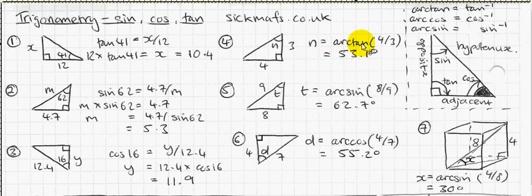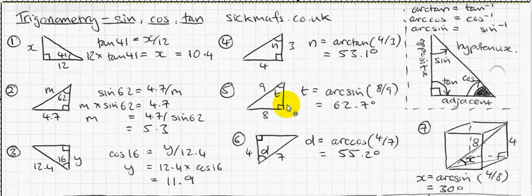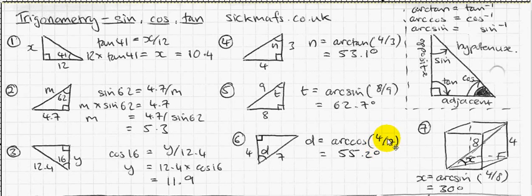This one's really easy — all you do is stick in the input, four divided by three, into the arc tan button, and out comes 53.1 degrees, which is the value of n. And this one is using the opposite and the hypotenuse, which means sine — do arc sine of eight divided by nine, stick that in, and out comes 62.7 degrees. The same with arc cos. You can use whatever division symbol you want — fraction symbol or the other division symbol — and you just stick it in and out comes the answer. This one's arc cos because it's the adjacent and the hypotenuse.